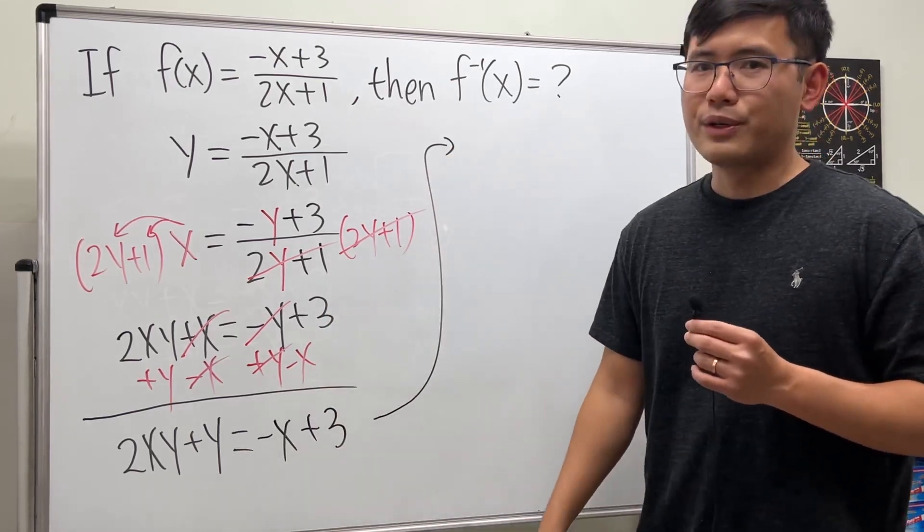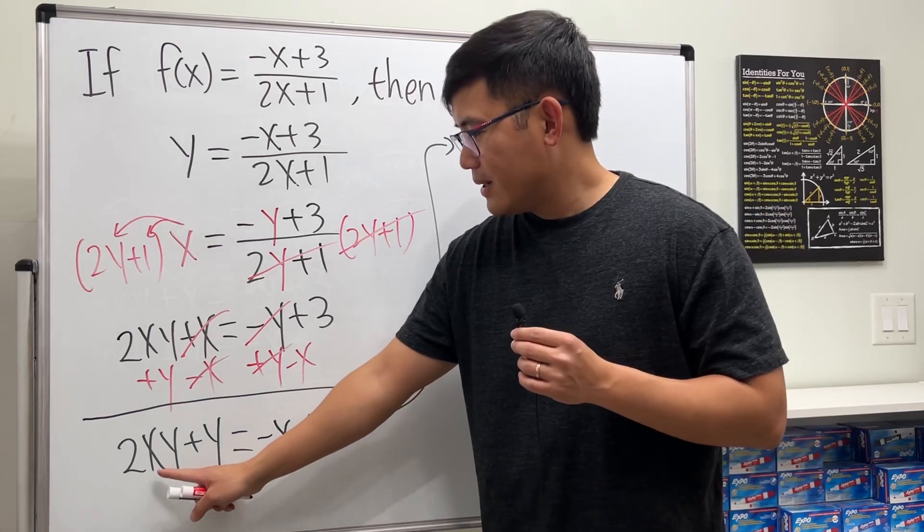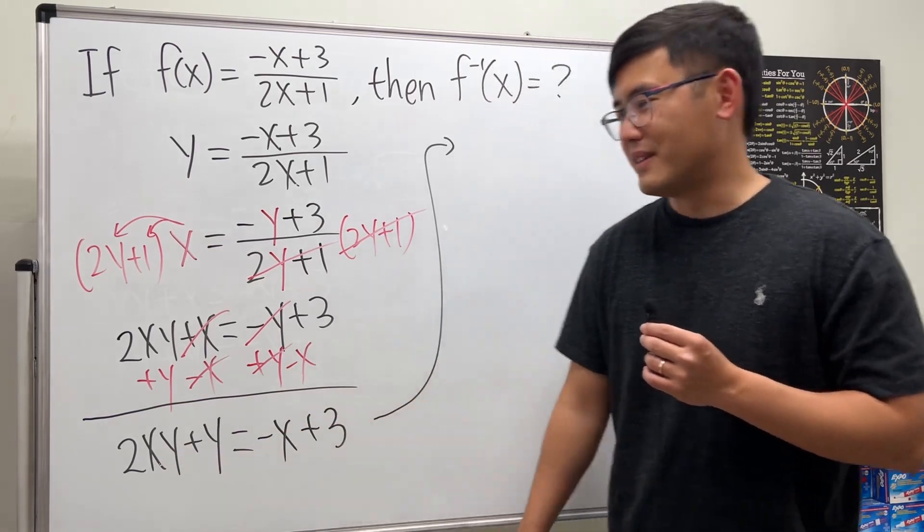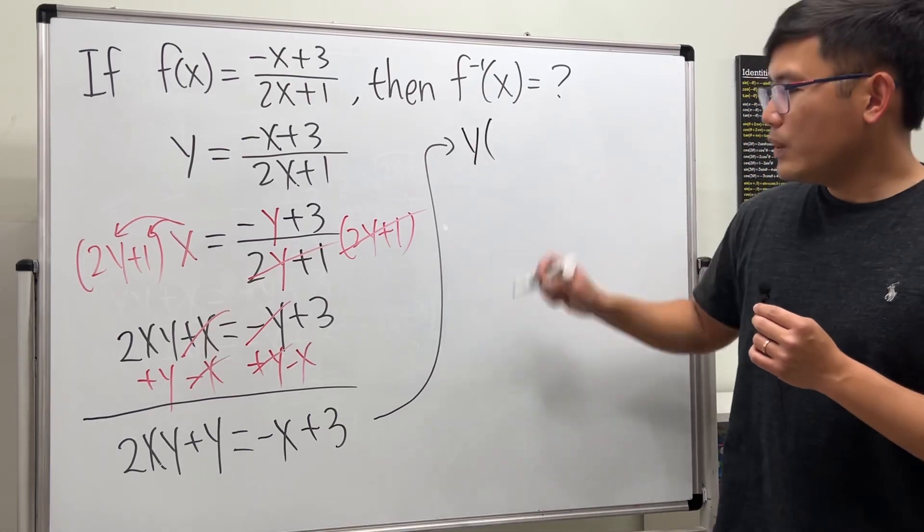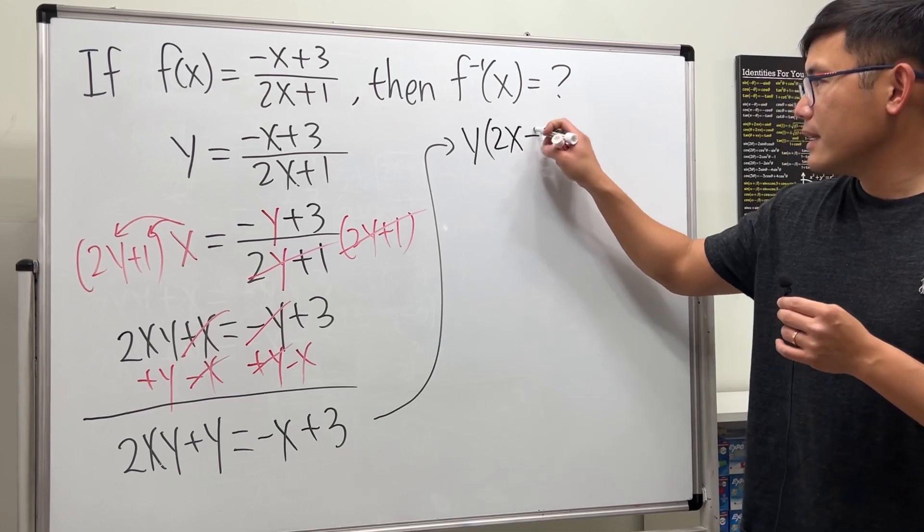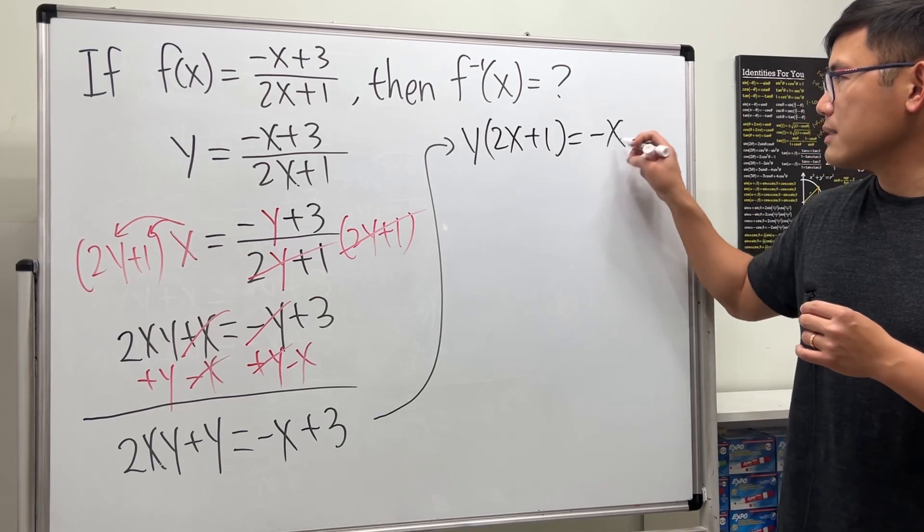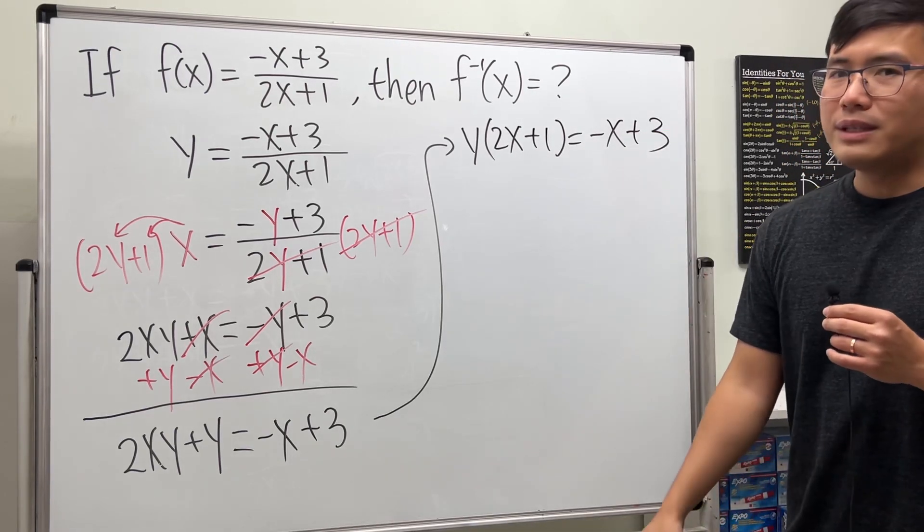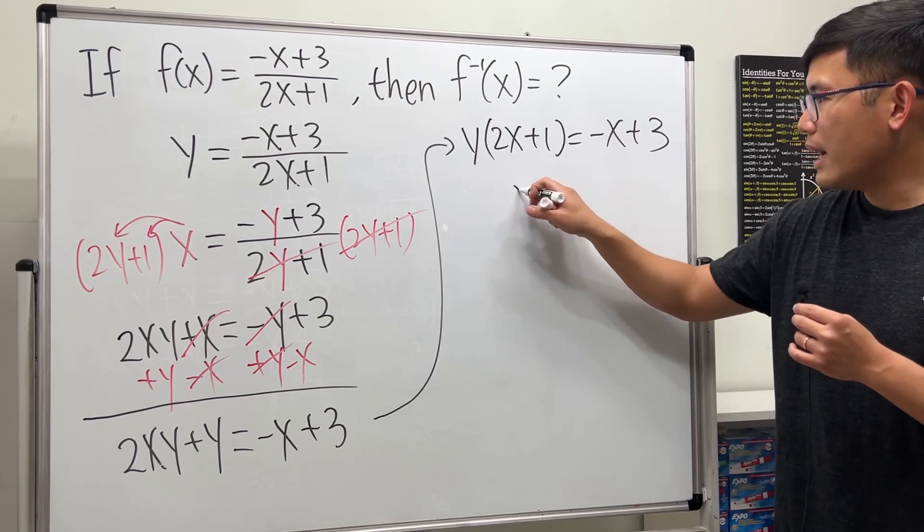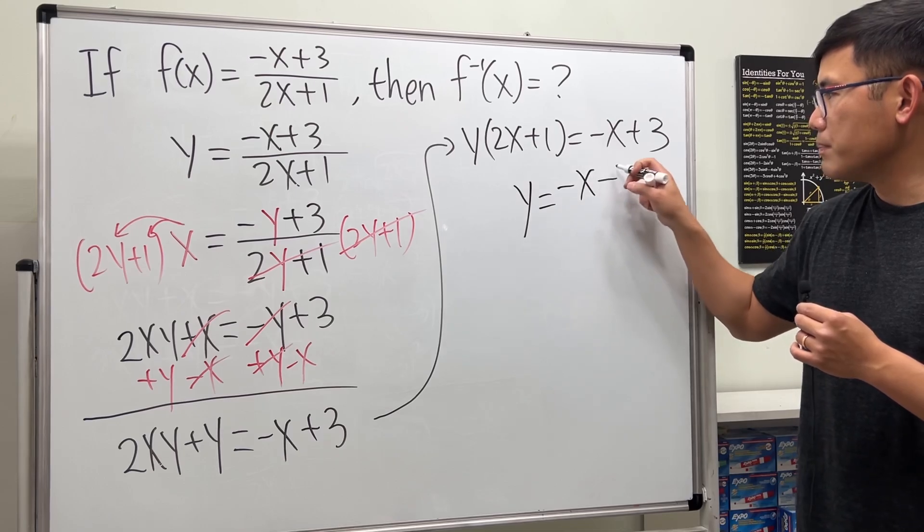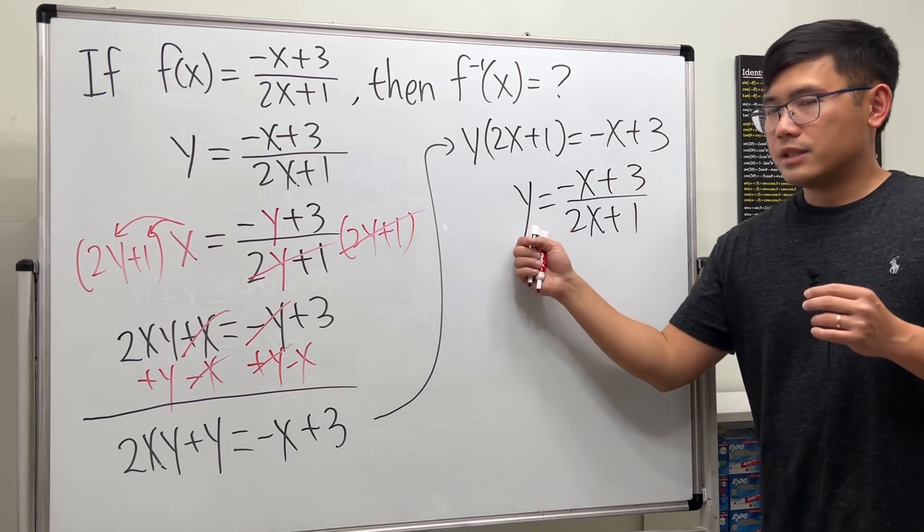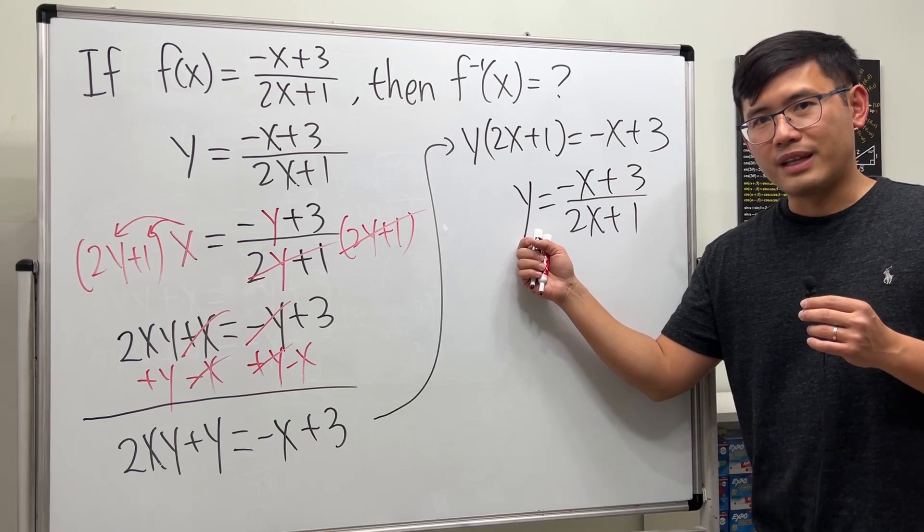Okay, so far so good. Here on the left hand side, these two terms both have y, so I can factor the y out. And we will get y times (2x plus 1), and that's equal to negative x plus 3. Finally, to isolate this y, we can just divide this on both sides. So y equals negative x plus 3 over 2x plus 1. That was step 3, we got the y by itself.